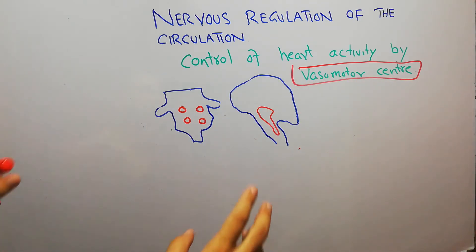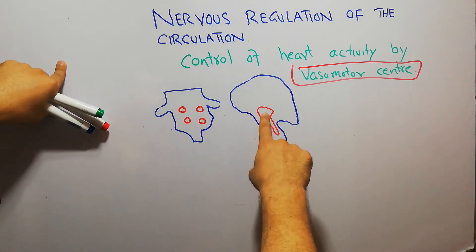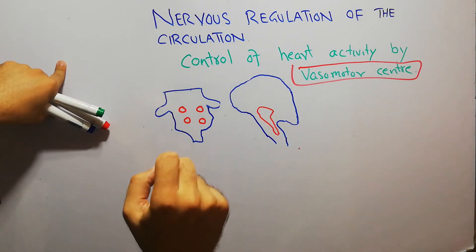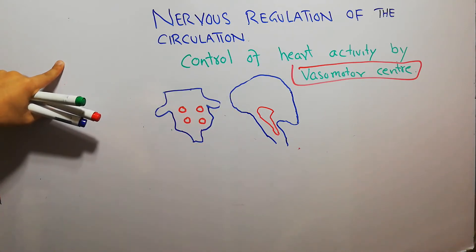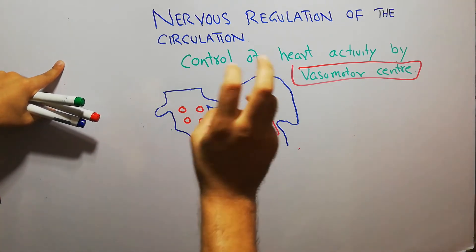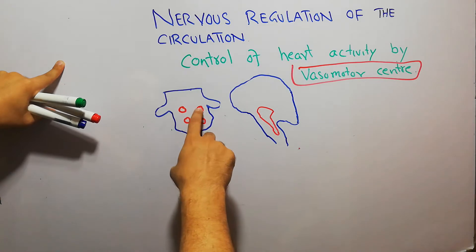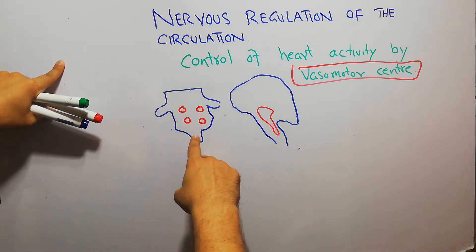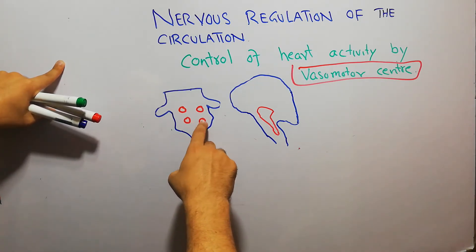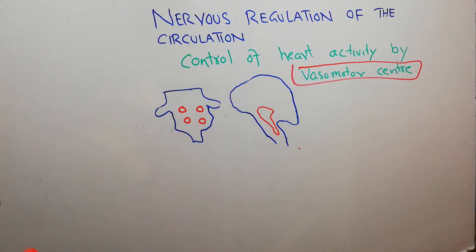Previously, we discussed that the Vasomotor Center is basically present at the level of medulla and pons. In the upper part of the medulla, in the Vasomotor Center, there are vasoconstrictor areas, and in the lower parts of the medulla, there are vasodilator areas of the Vasomotor Center.